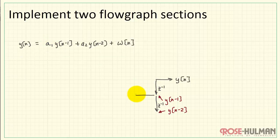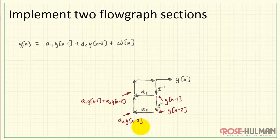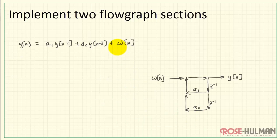I'll pass y of n minus 1 through a scaling of a1, and y of n minus 2 through a scaling of a2. Now I can bring these scaled versions together at our first summing point, and direct that result to the output y of n. So we form first a scaled version of y of n minus 2, then add that with the scaled version of y of n minus 1. We still need to add in w of n, which I'll do at a second summing junction. That's our first flow graph subsection.